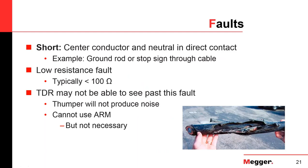Then we have a short — this typically happens when the center conductor and the concentric neutral are in direct contact, possibly by metal pieces such as a ground rod or a stop sign that was installed and hit a cable, creating a direct electrical connection. These are very low resistance faults — typically 10 to 100 ohms. The problem with those faults is there is no possibility to create a flashover or spark, so you also cannot use the arc reflection method on those faults.